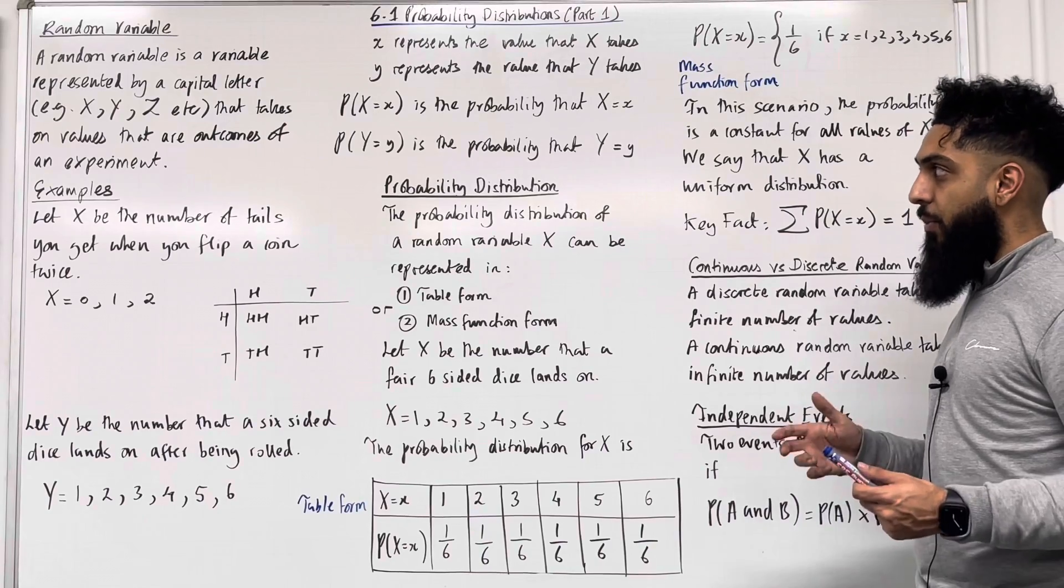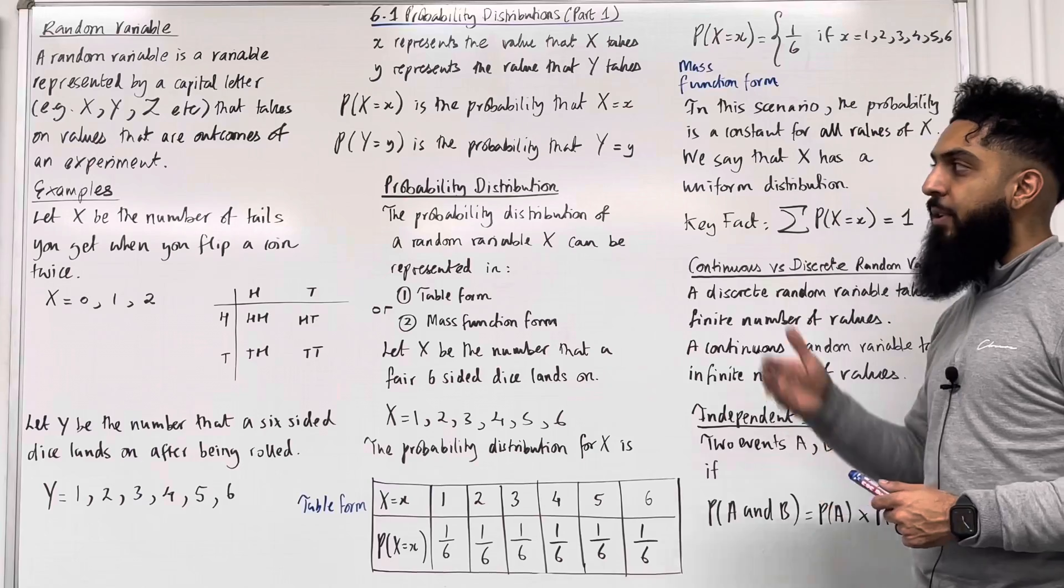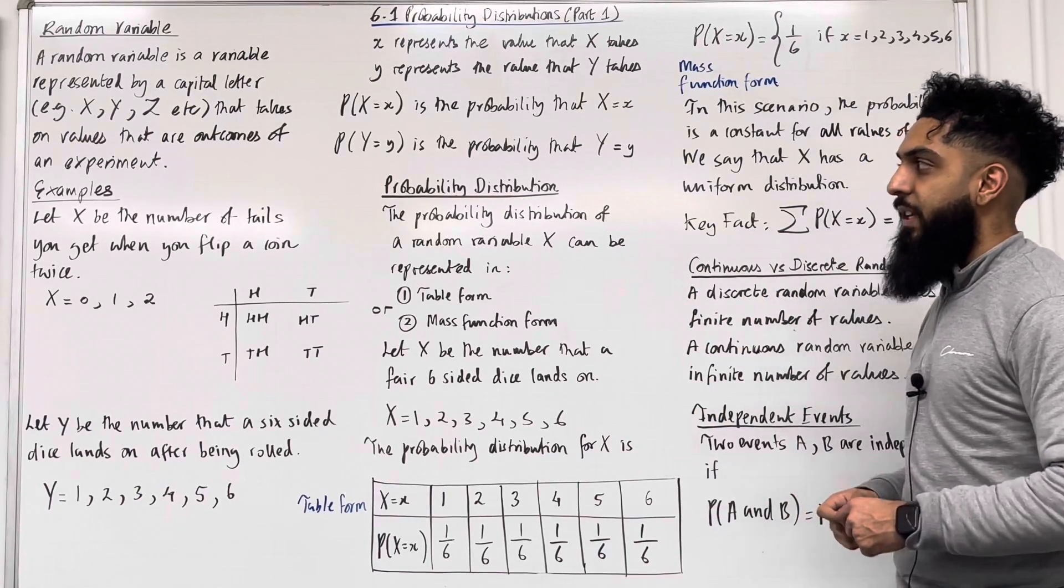Firstly, what is a random variable? A random variable is a variable represented by a capital letter, for example capital X, capital Y, capital Z, etc., that takes on values that are outcomes of an experiment.